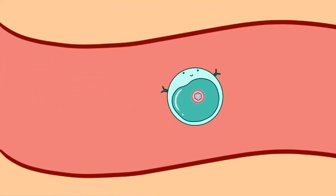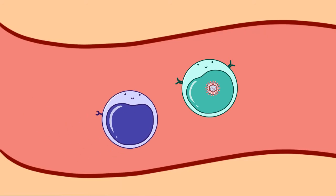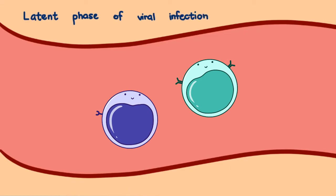Infected B cells also attract T cells. In CD4-positive T cells, the Marek's disease virus integrates itself into the genome of the cell. This is the start of the latent phase of viral infection, where the virus escapes immune detection. Herpes viruses in general like to do this — animals are persistently infected, and during times of stress, the disease resurfaces.